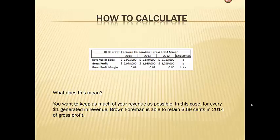Brown Foreman and the other companies we're looking at in this ratio analysis sell spirits — they sell and distribute alcohol. When we talk about cost of revenue, it can include things like the wine or spirits that go into the bottle, the bottle itself, the label that goes on the bottles, and the shipping cost to distribute it or get it to the factory. So we're looking at direct costs of sales that actually go into the production of the product or service.